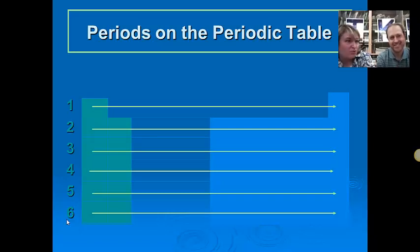If I get my group, and then I get my period, I can locate a specific element. And I noticed how these are numbered with regular numbers and not Roman numerals, so that we don't get the period and the groups confused.